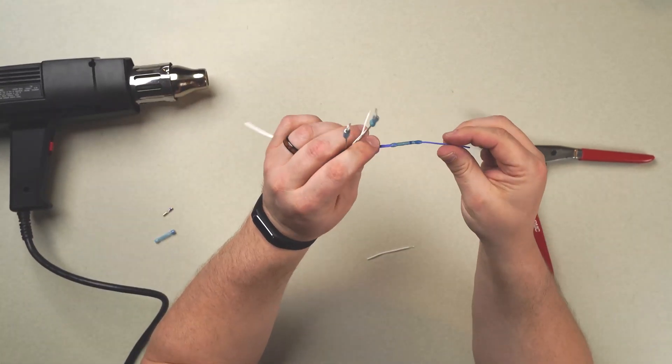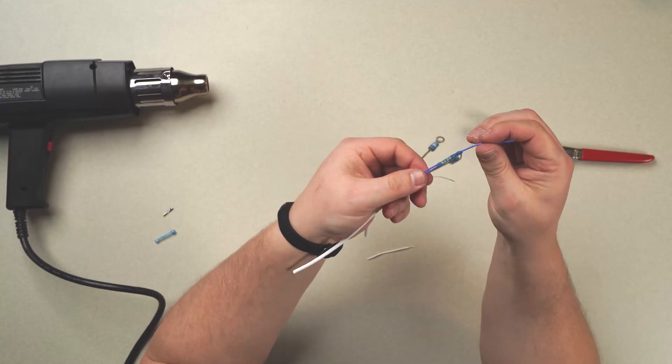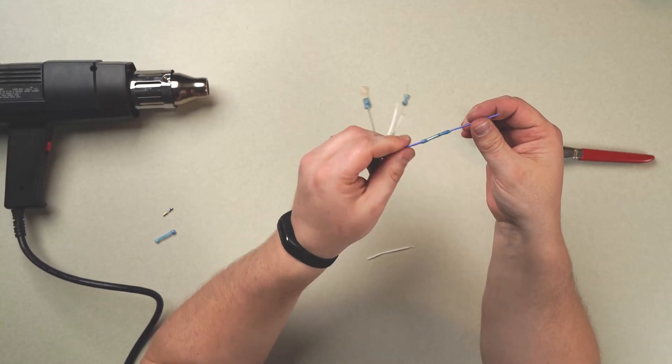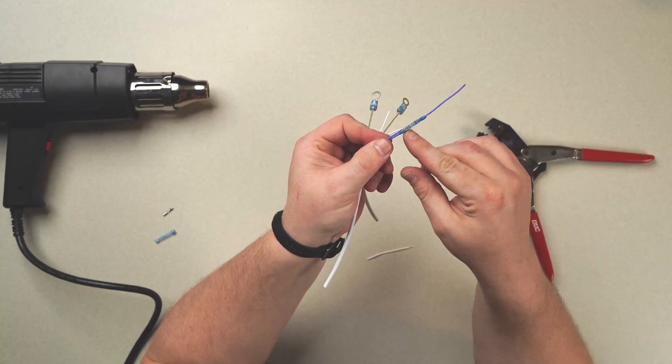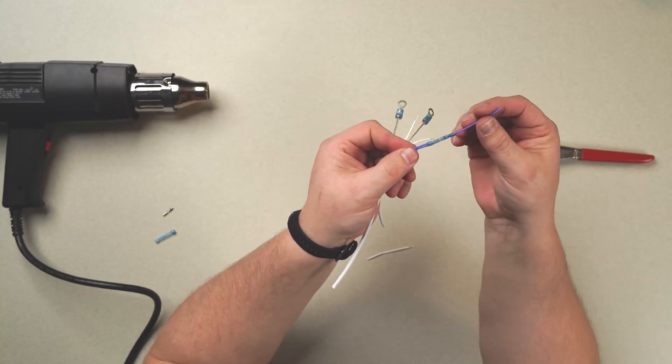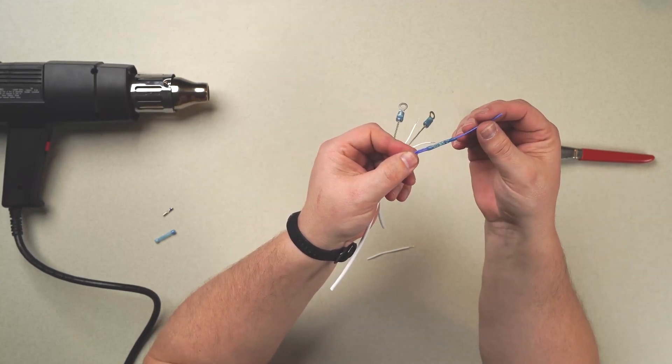Now while we applied our heat, we moved it around to apply it evenly so we didn't burn or discolor the sleeve. You can see we fully melted both ends, therefore providing us with that environmental seal.